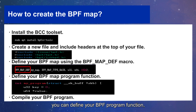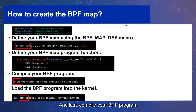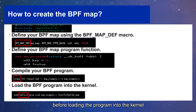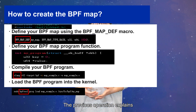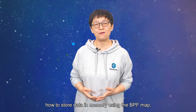Once this is done, you can define your BPF program function, which will be executed whenever a relevant event occurs, for example when a new packet is received. Finally, compile your BPF program using the Clang compiler and the BCC library before loading the program into the kernel using the BPF tool command. And just like that, you can interact with your BPF map and view its content.